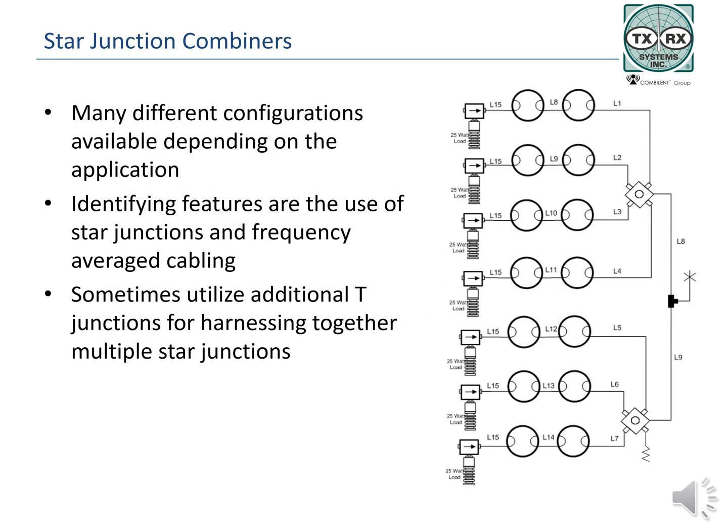Star junction combiners can be in many different forms, not just a single junction with cavities or filters attached. The junction may have different numbers of ports. Cables are manufactured to the average length of the frequencies going through the combiner. Cavities are tuned to the frequencies of the transmitters, and then the signals travel through the cabling to the star junction, where they combine and travel to the transmit antenna. Other types of couplers may be used in star junction combiners to further combine individual sections. A four-channel and three-channel star junction are shown being combined through a T-coupler into a single output feeding the antenna.